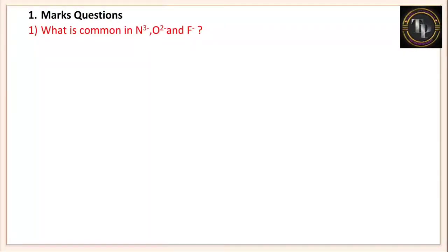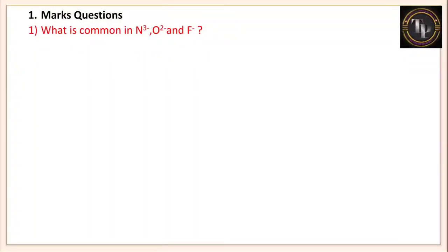What is common in N³⁻, O²⁻, and F⁻? Three ions are given and you are asked to find the common thing. Nitrogen's atomic number is 7; three extra electrons makes it 10. Oxygen has 8 electrons plus 2 extra = 10. Fluorine has 9 electrons plus 1 extra = 10. All these species have a common electron number, and such species are called isoelectronic species.